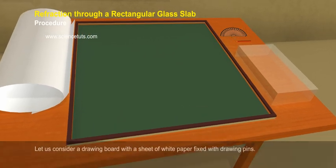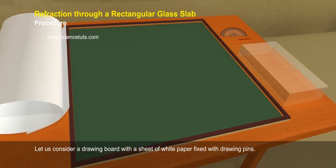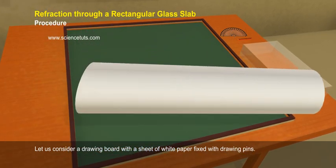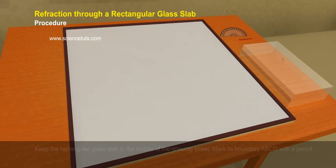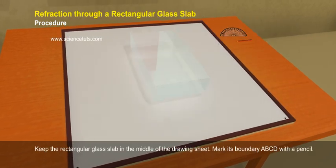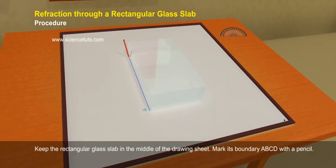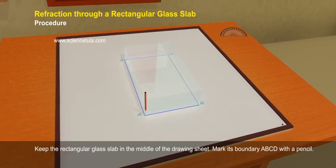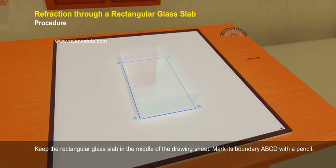Procedure: Let us consider a drawing board with a sheet of white paper fixed with drawing pins. Keep the rectangular glass slab in the middle of the drawing sheet. Mark its boundary ABCD with a pencil.